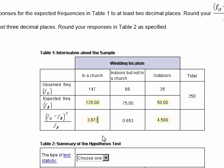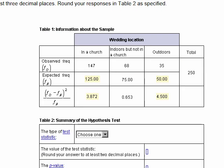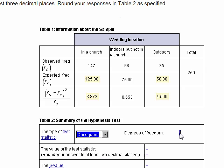The chi-squared test statistic is the sum of all of these values. The degrees of freedom for this test is the number of categories — whether it's in a church, indoors but not a church, or outdoors — so three categories less one. The degrees of freedom will be two.